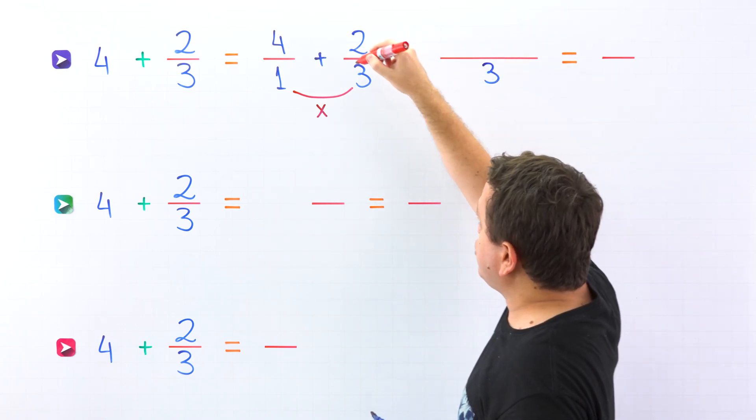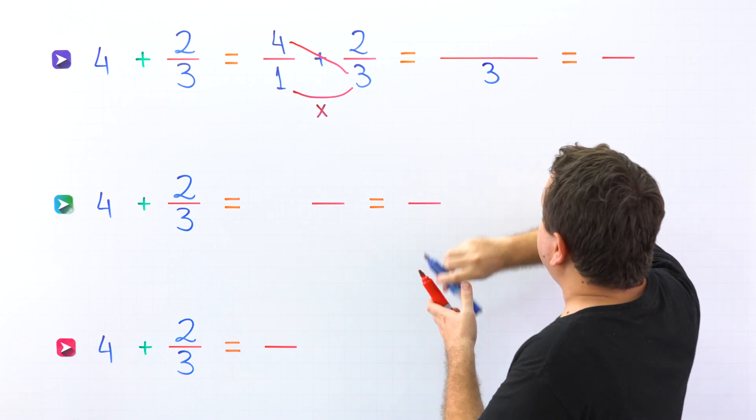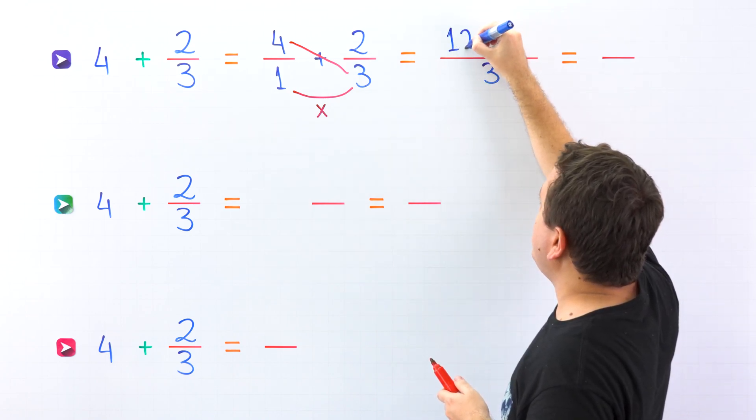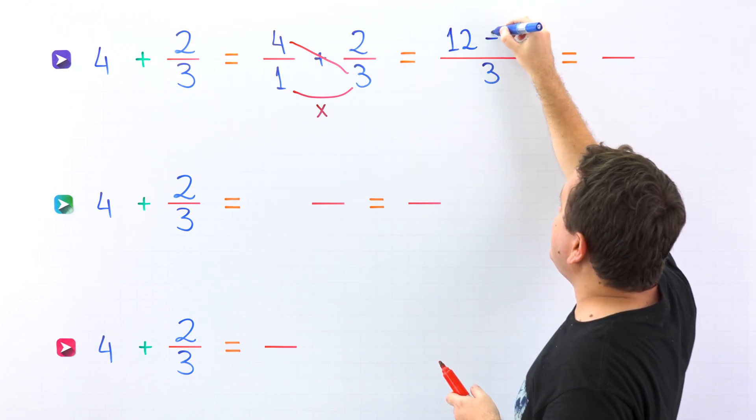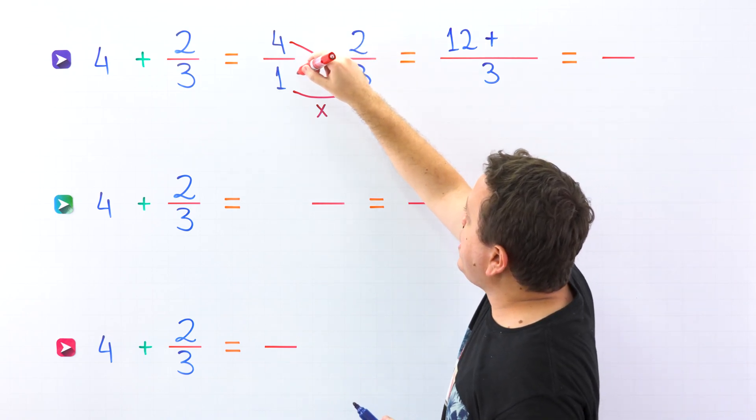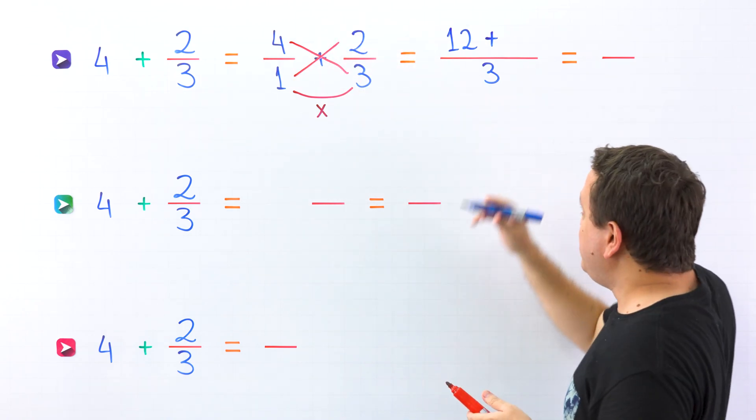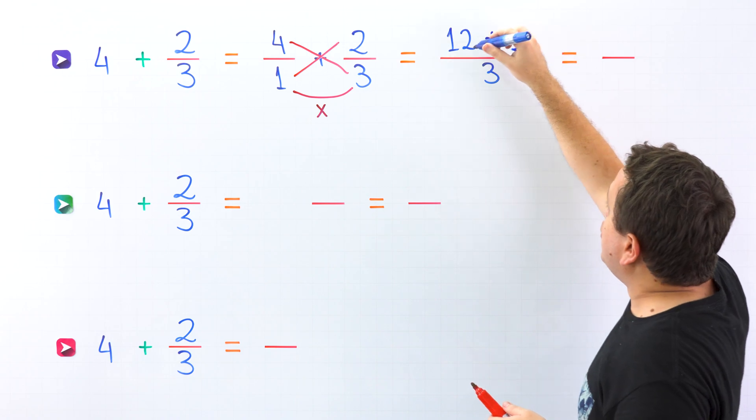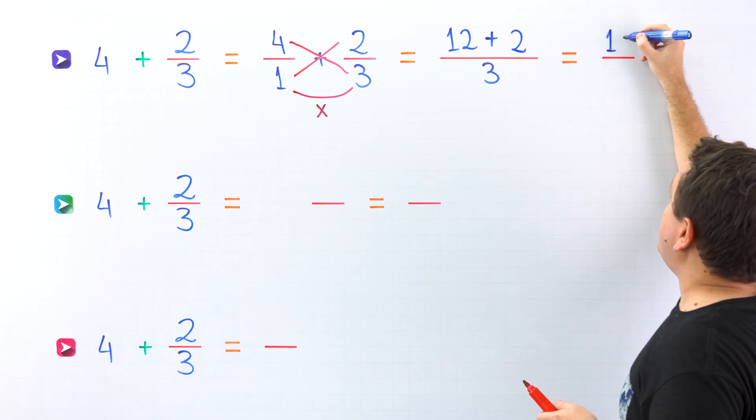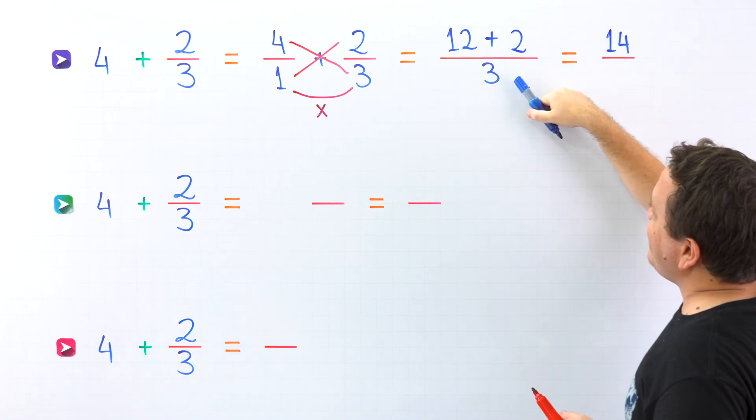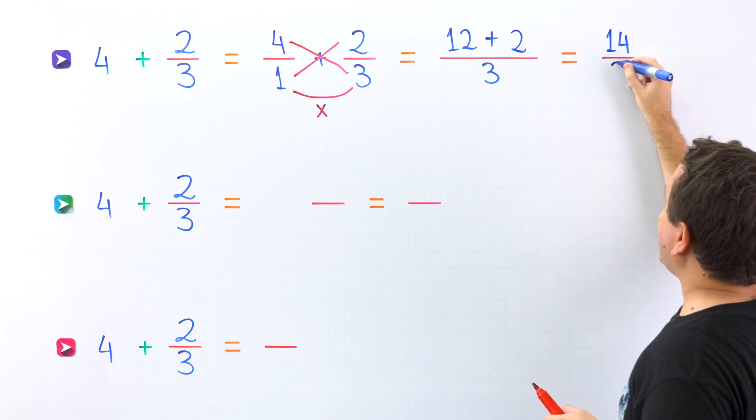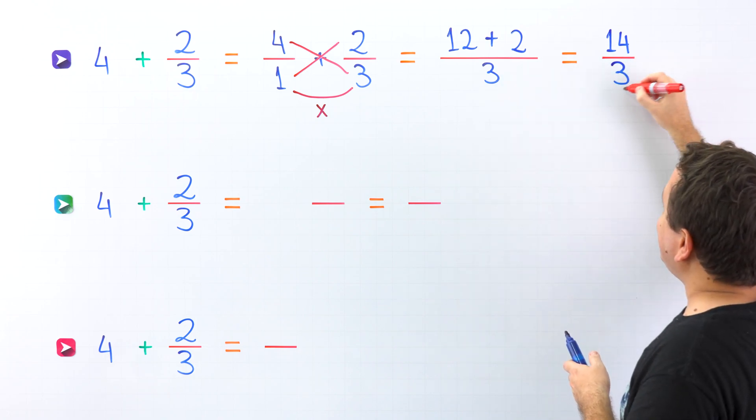Now we're going to add the cross products. 4 times 3, this is 12. Now we have the plus sign, and then comes on the other side, 1 times 2. 1 times 2 is 2. 12 plus 2, this is 14. Finally, the denominator stays the same. 3 come over here. The answer is 14 thirds.